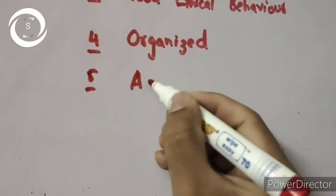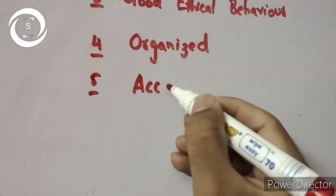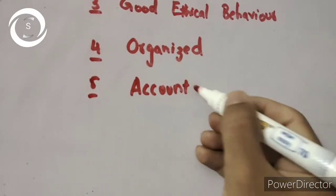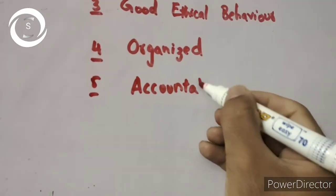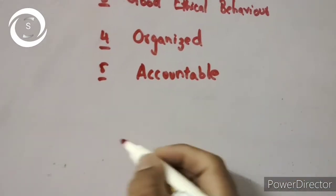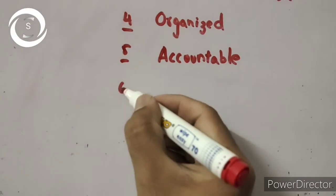A professional doctor should be accountable. They should take responsibility for their mistakes and take corrective measures. They should understand and commit that they have done a mistake and are now able to rectify it.